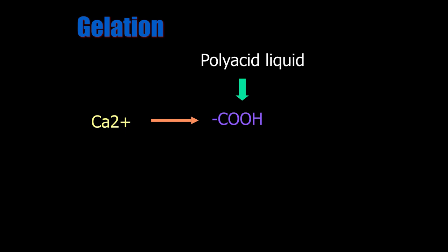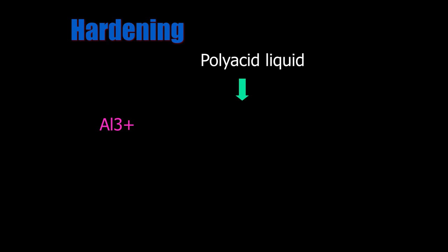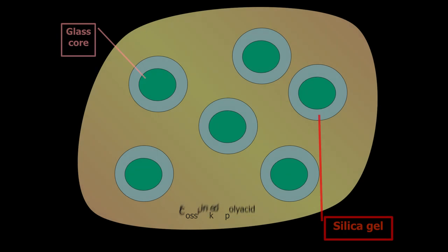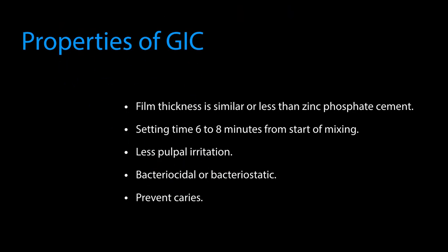The set cement consists of unreacted glass particles surrounded by silica gel, bonded together by a matrix of hydrated calcium and aluminum poly salts. Fluoride is not an integral part of the matrix formation; therefore it is available for release without compromising the structural integrity of the restoration.